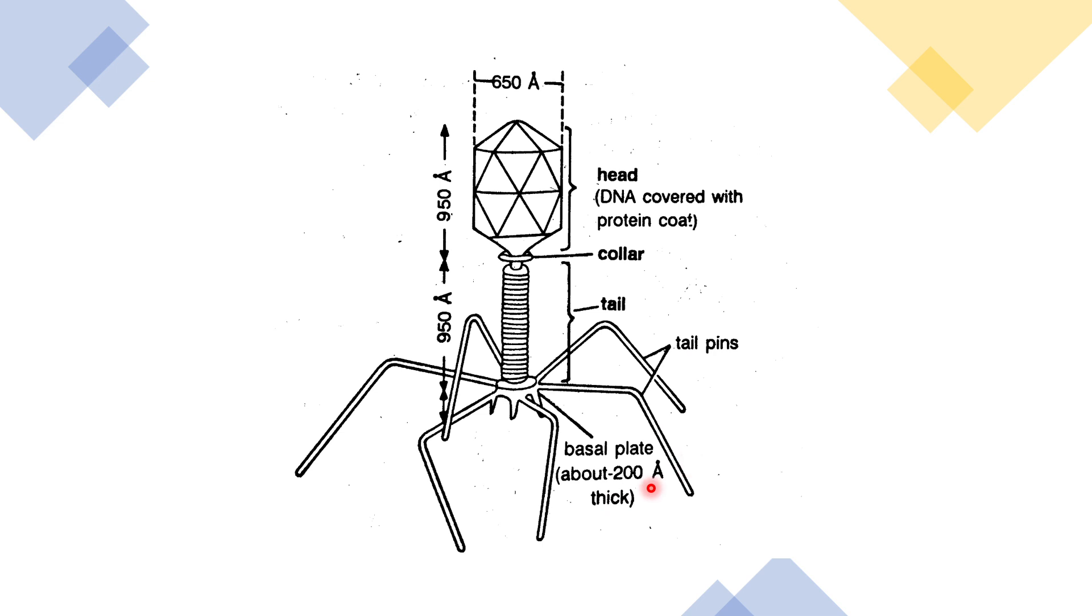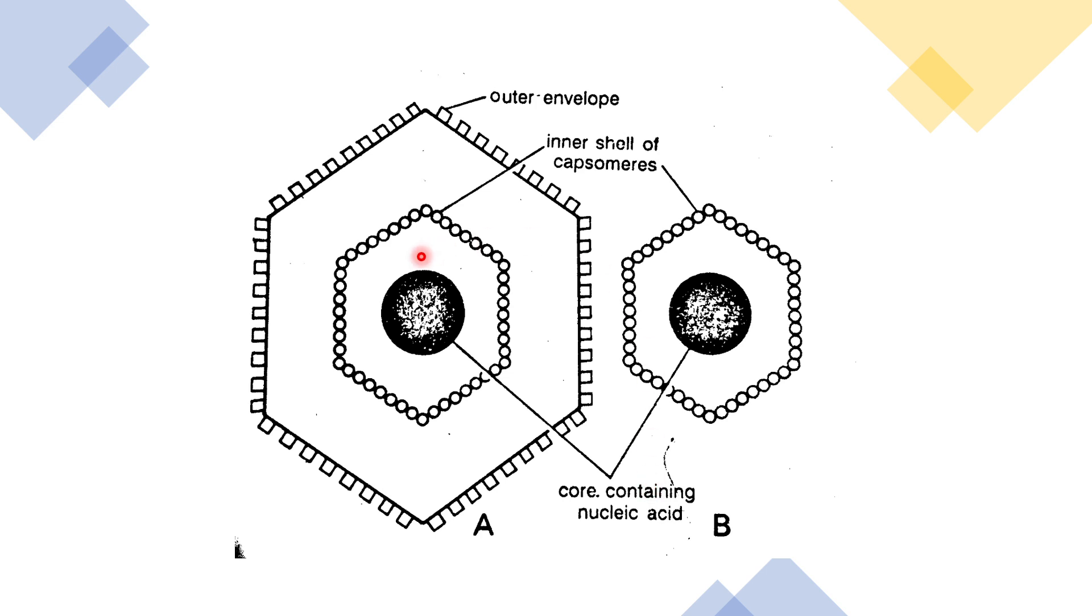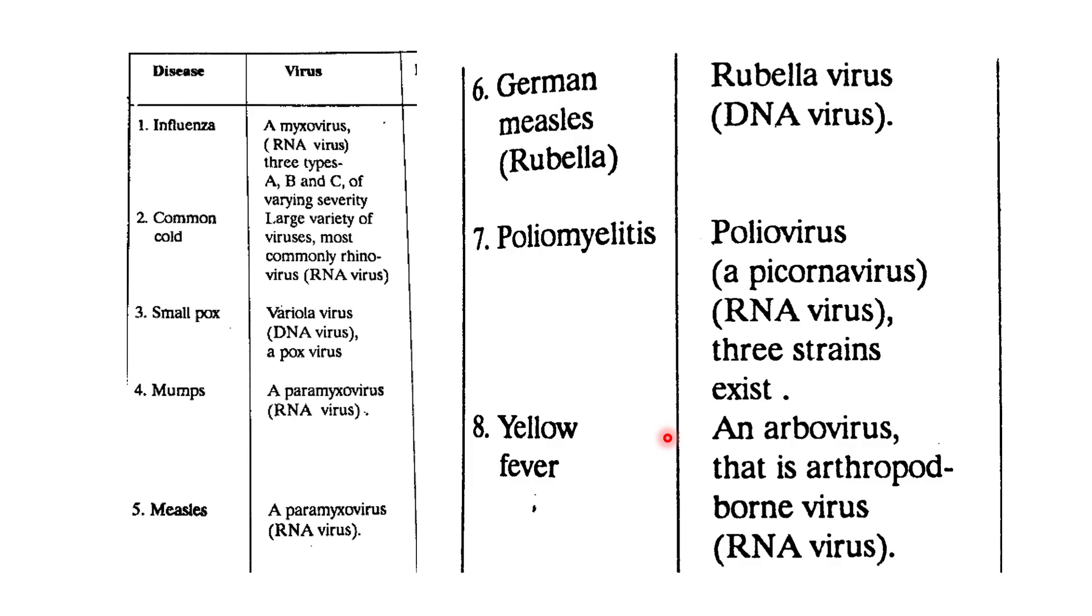When we see the common structure of a virus, it has a central core of nucleic acid which is either DNA or RNA, and an outer protein coat known as capsid. The small subunits of this capsid are known as capsomeres. When it has an outer envelope it is known as enveloped, and when the outer envelope is absent it is known as naked.